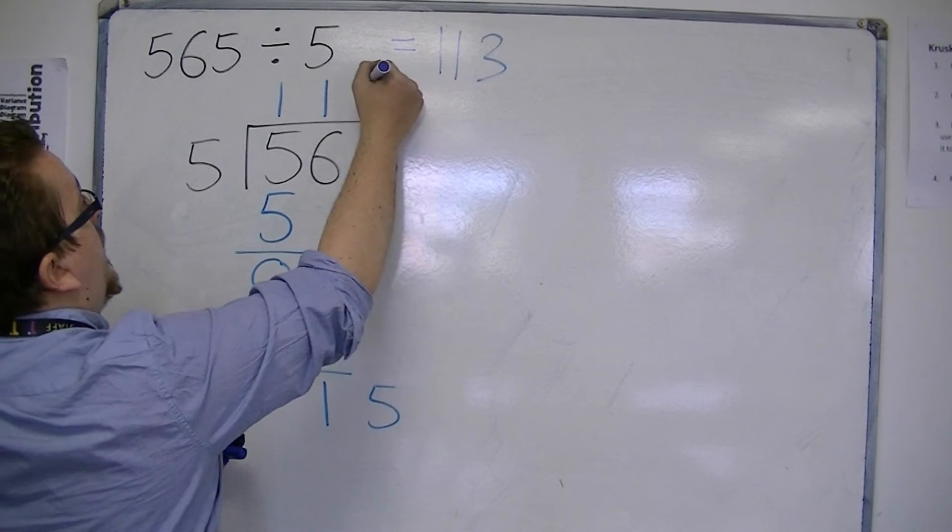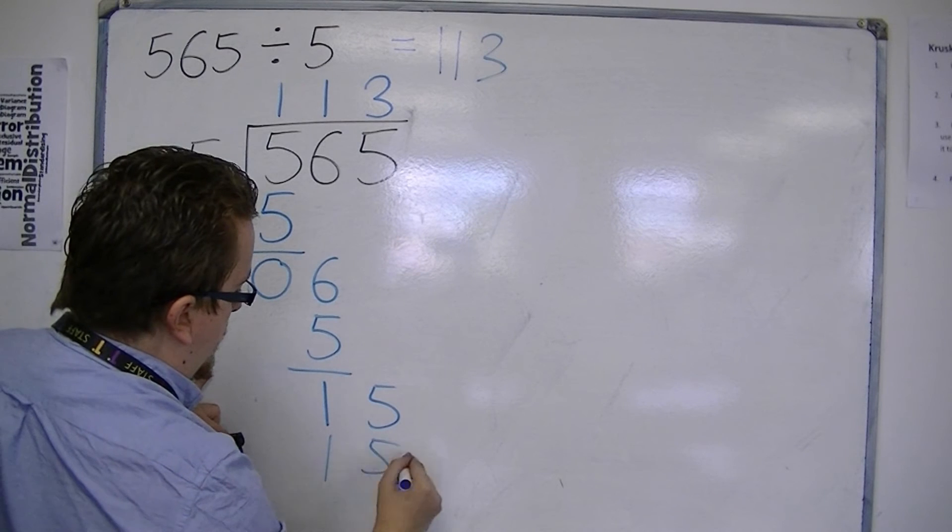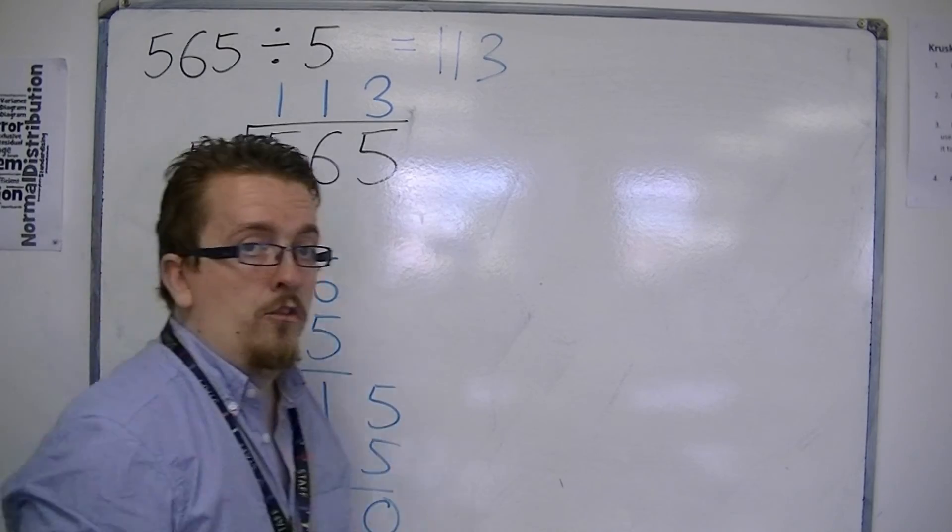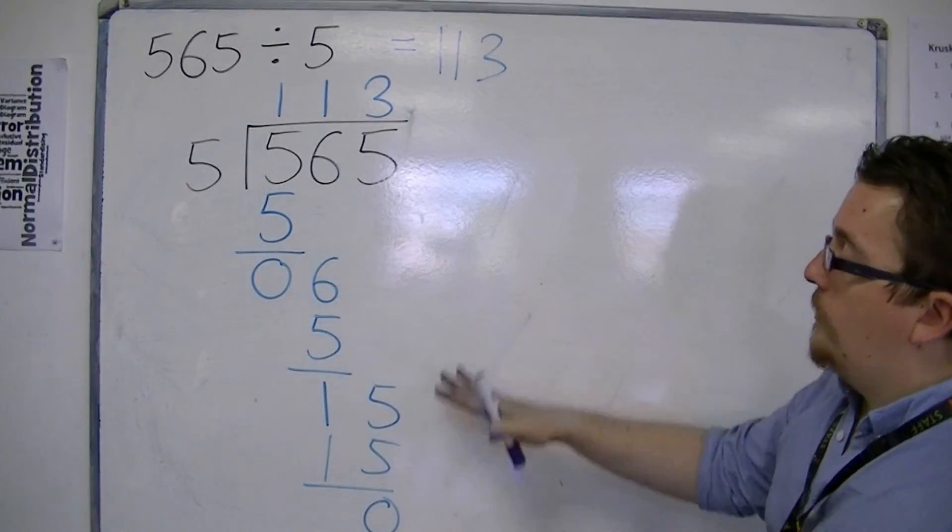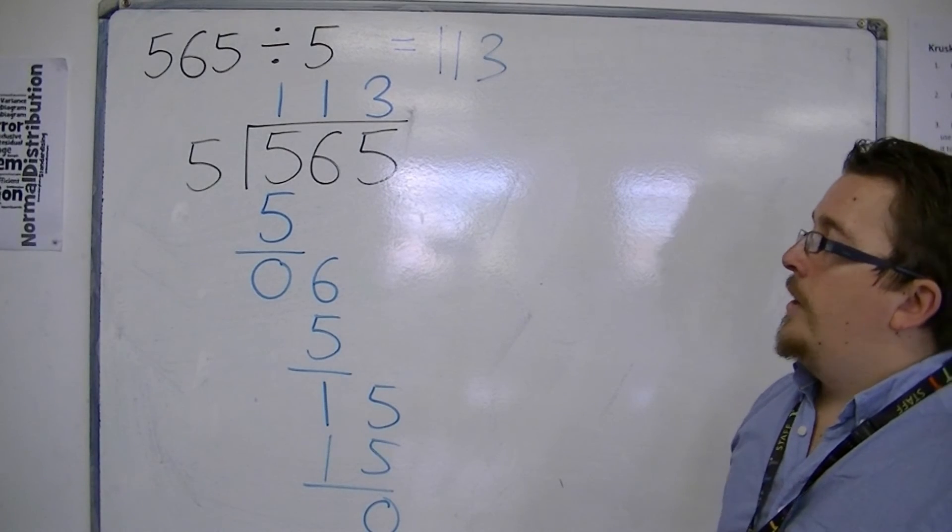5s into 15 go 3 times. 3 times 5 is 15. 15 take away 15 is 0. And so we have the remainder of 0. So, this is long division. And we get to our same answer, 113.